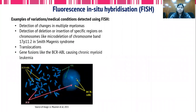Fluorescence in-situ hybridization is quite common in case of detection of micro-deletions or micro-duplications, and in cancers like multiple myeloma or chronic myeloid leukemia. A very common BCR-ABL gene fusion is detected using FISH in case of chronic myeloid leukemia.